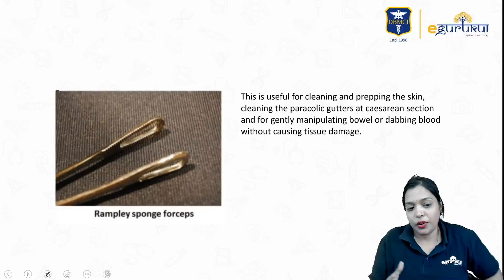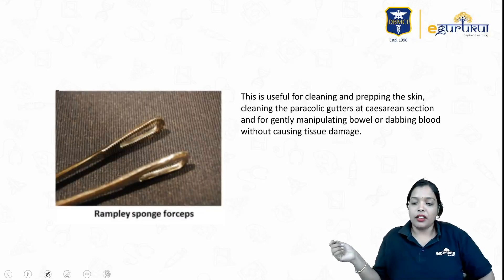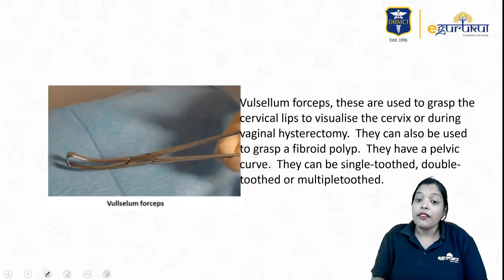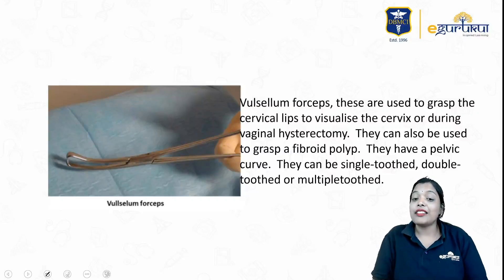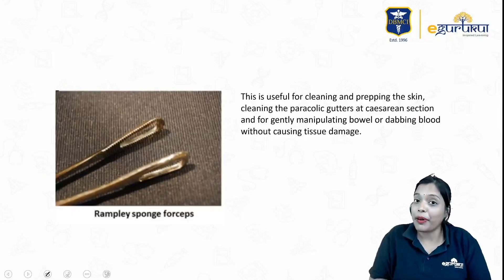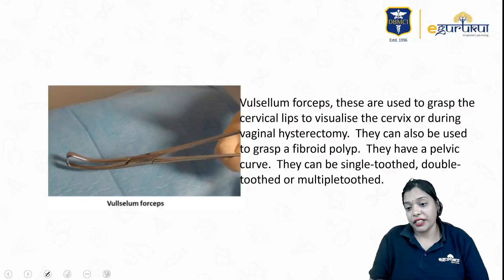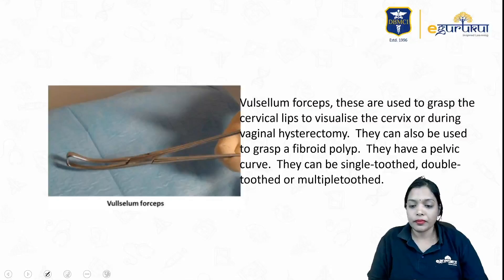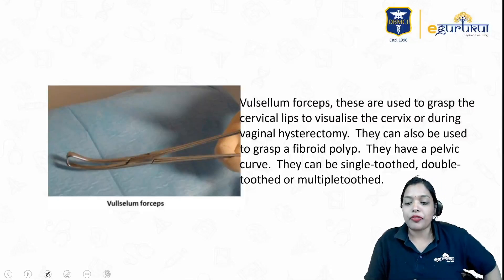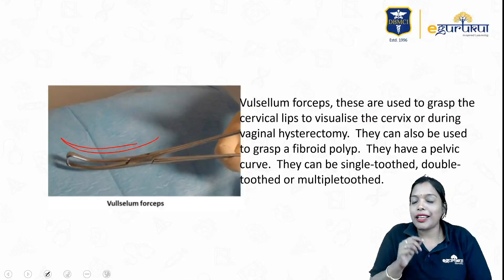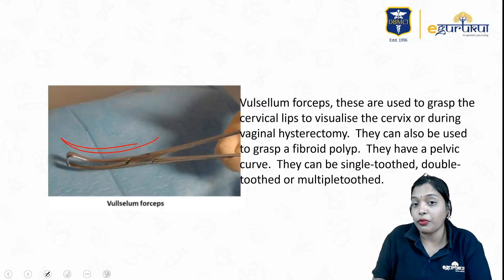Sponge holding forceps — Rampley's sponge holding forceps — are used for cleaning and painting. Valsellum forceps are toothed and are used for holding the non-pregnant cervix. Sponge holding forceps can be used for holding the pregnant cervix. Valsellum is a traumatic forceps and can also be used to grasp a fibroid polyp. They have a pelvic curve and can be single-tooth or multiple-tooth.